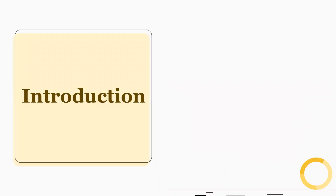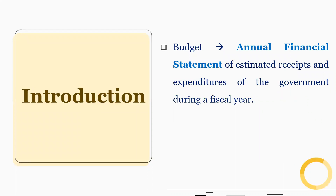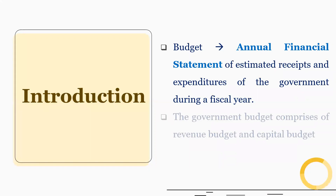Let's begin with the idea of budget. Budget is the annual financial statement of estimated receipts and expenditures of the government during a fiscal year. The government budget comprises of revenue budget and capital budget.